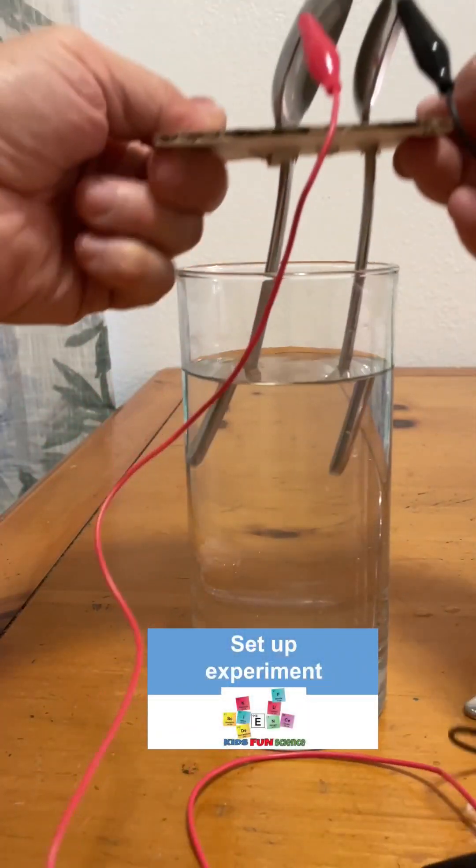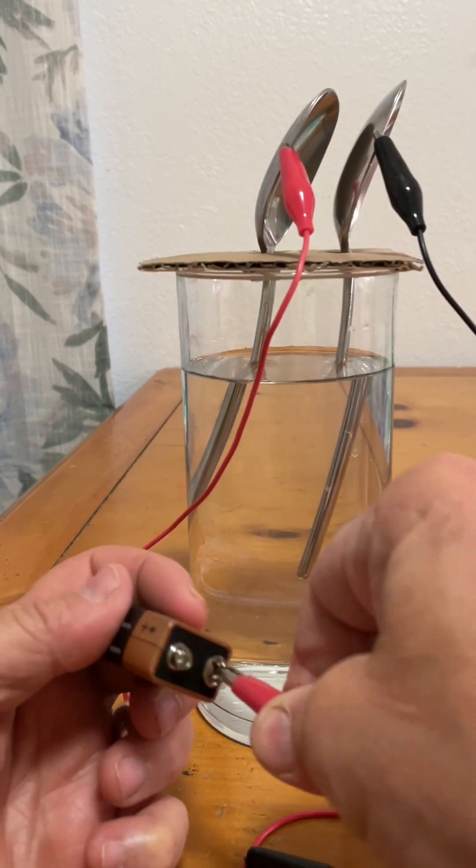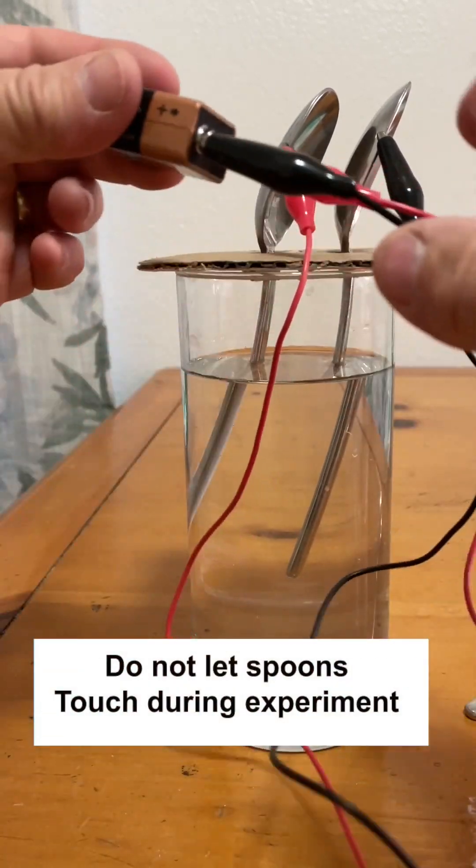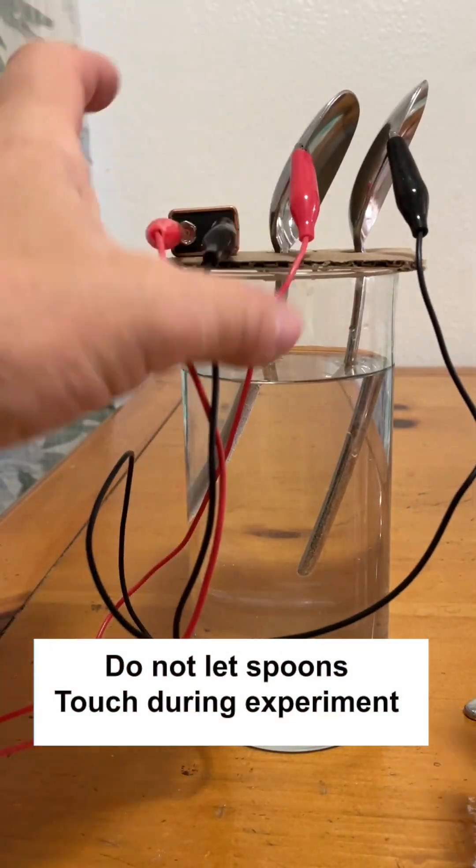So you put two spoons in the cardboard, connect the alligator clips to the spoons, connect the positive to the larger connection on the 9-volt battery, and you are set up.